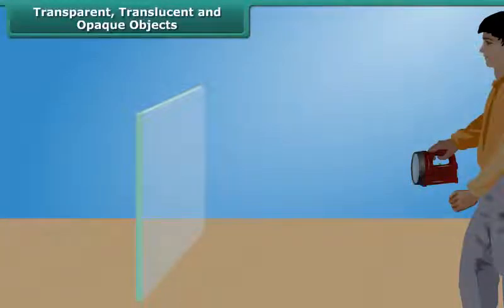Objects are classified as transparent, translucent, or opaque depending upon their treatment of light.